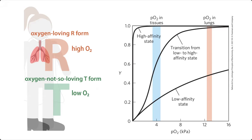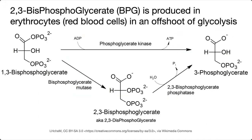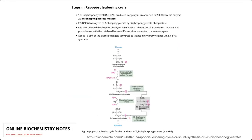One of the ways we can do this is with the molecule 2,3-bisphosphoglycerate, or 2,3-diphosphoglycerate as it's sometimes called, typically abbreviated 2,3-BPG. It is produced in erythrocytes — red blood cells — as an offshoot of glycolysis.